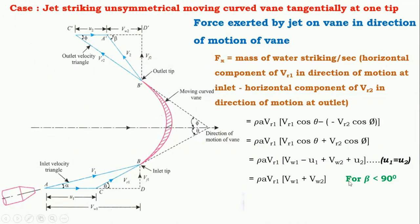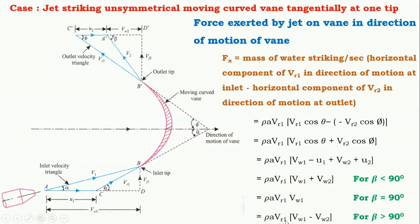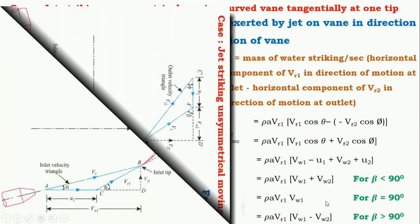Now, if beta is less than 90 degrees, as can be observed from the figure, the formula gives Fx equal to rho A Vr1 into bracket Vw1 plus Vw2. If the value of beta is equal to 90 degrees, this relation is modified and we get rho A Vr1 into Vw1. Now if the value of beta is greater than 90 degrees, the correlation changes and we get Fx equal to rho A Vr1 into bracket Vw1 minus Vw2.